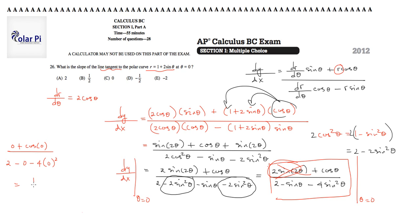So this reduces to cosine of 0 is 1. Therefore, 0 plus 1, which is 1 in the numerator. And in the denominator, we have 2 minus 0 minus 0. Therefore, this is 1 half.